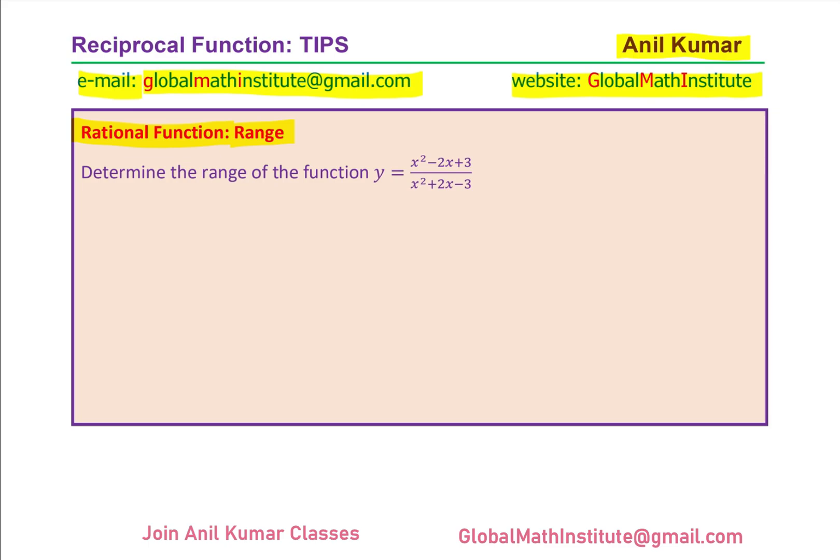Now, let us look into the solution of this problem. We are given y equals to x square minus 2x plus 3 divided by x square plus 2x minus 3. Finding range is to find possible y values. Therefore, the strategy here is to cross multiply.